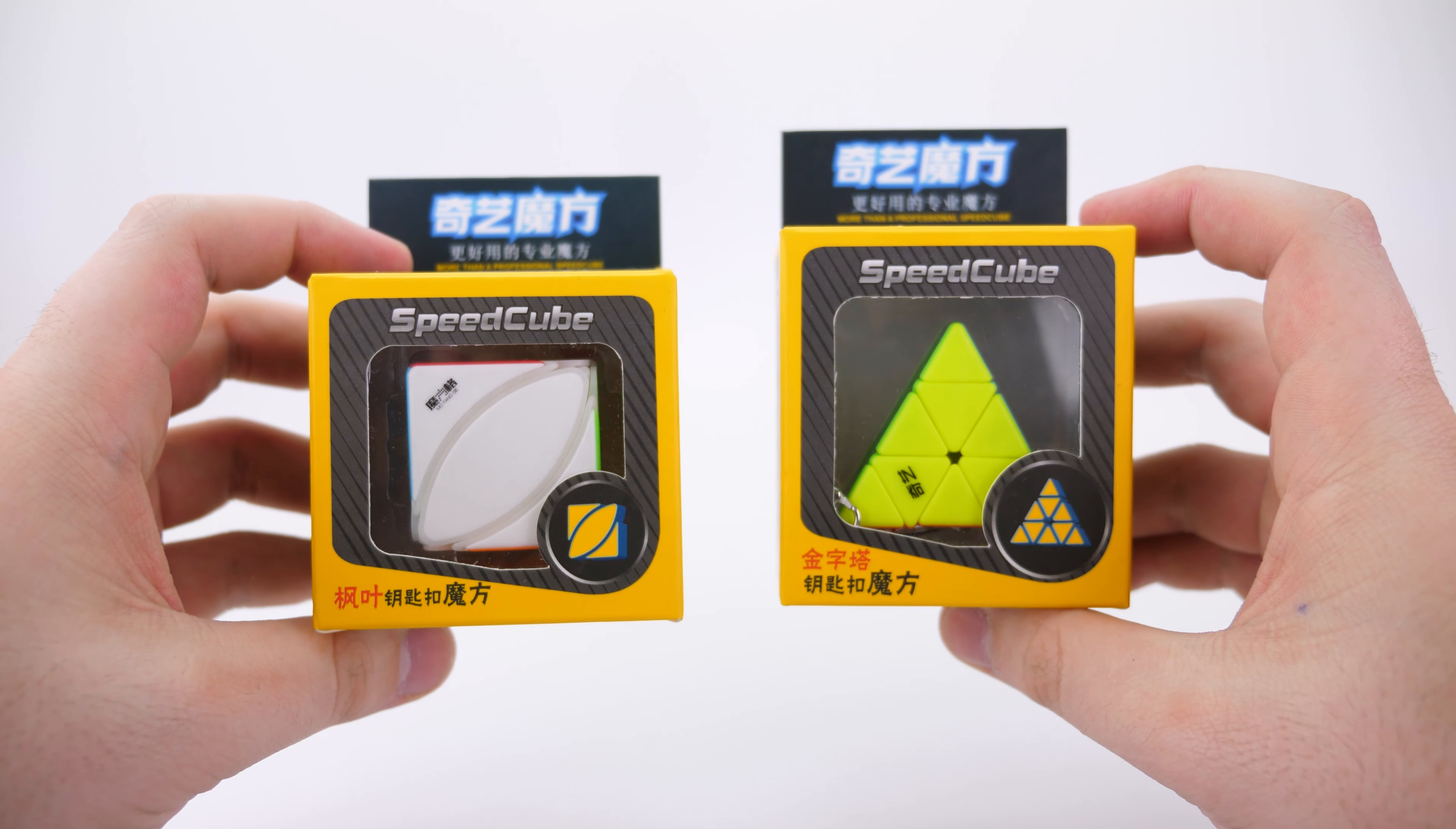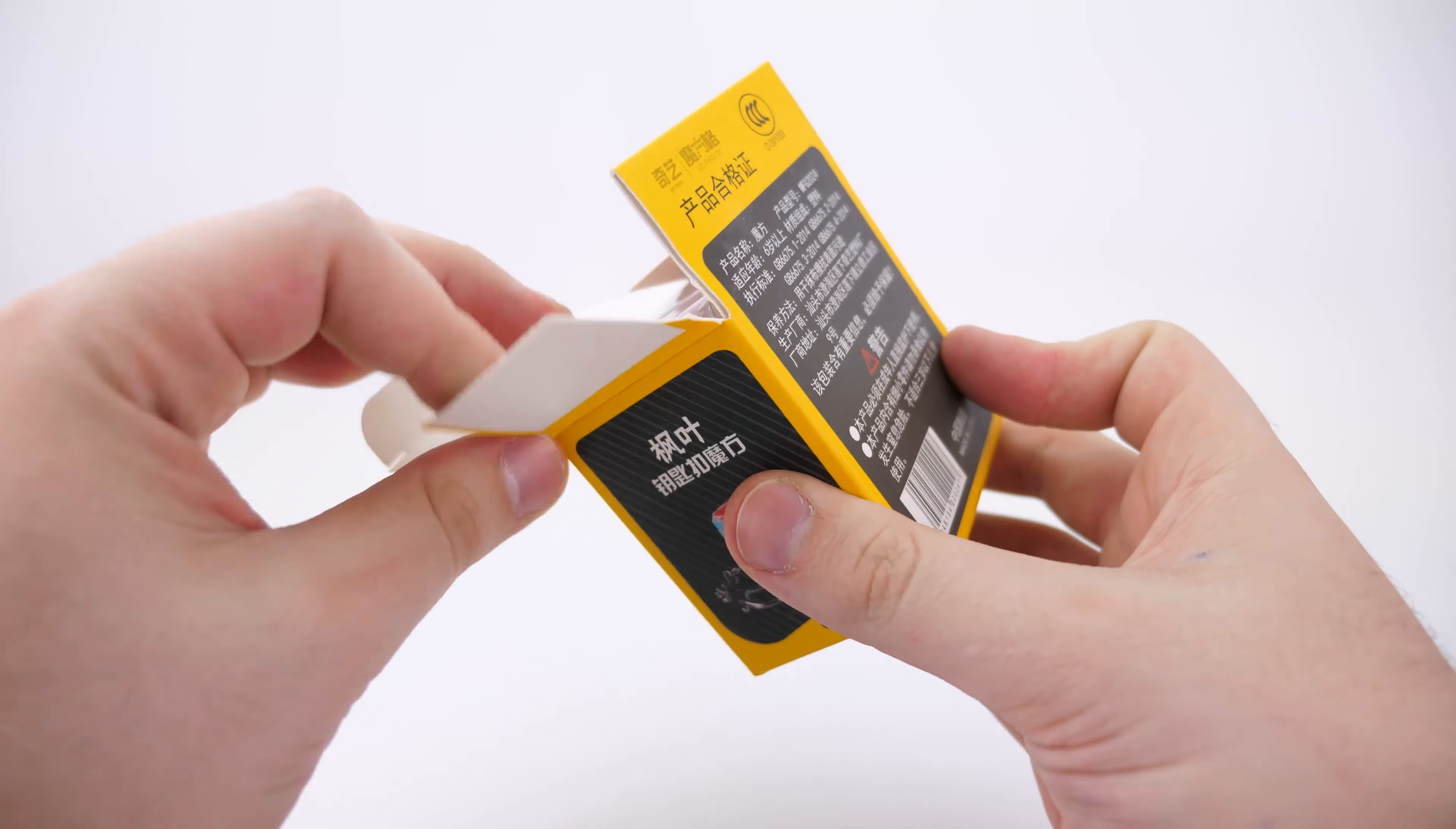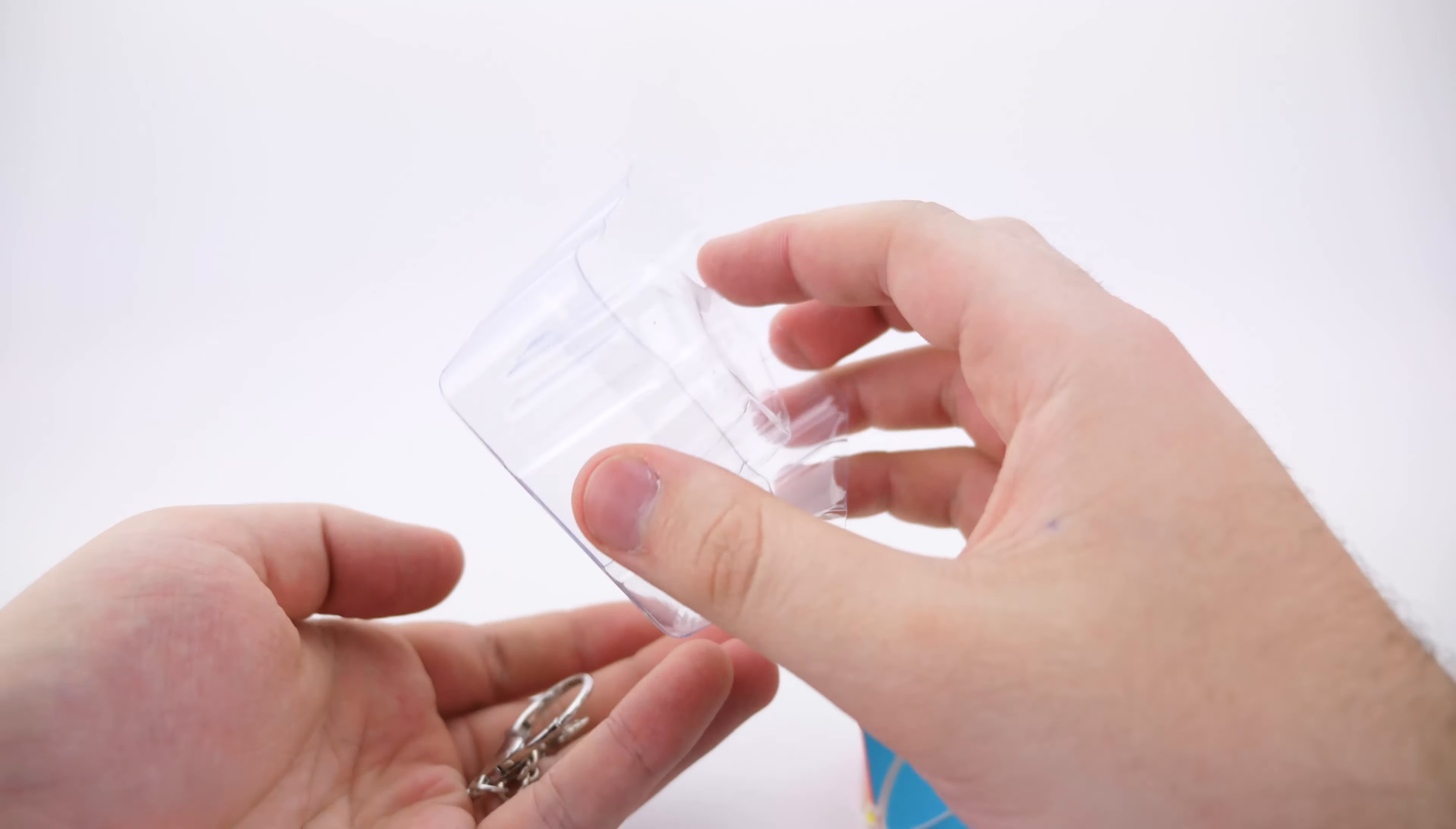Okay. Now we have a couple of key chain cubes from Chi. We have the Ivy cube and the Pyraminx. Let's open the Ivy first real quick. Okay. Okay. We get the cube and the key chain itself.